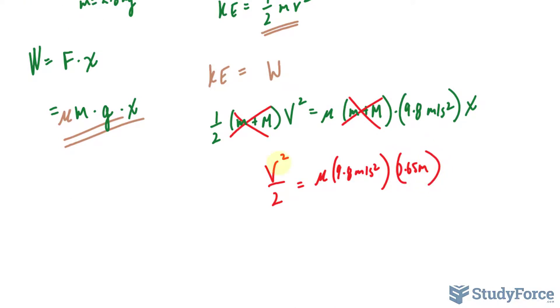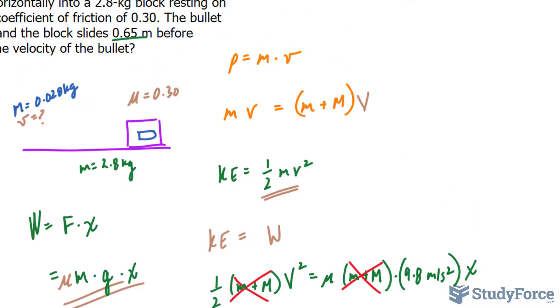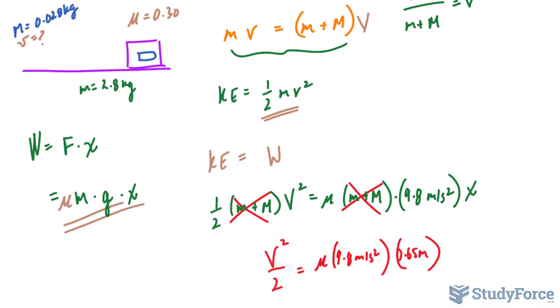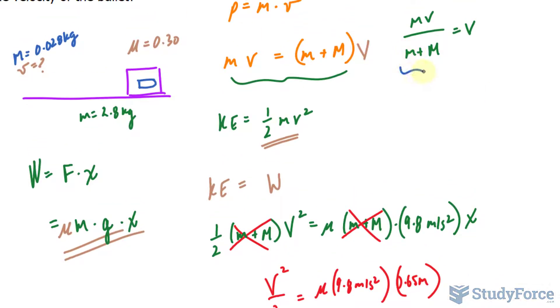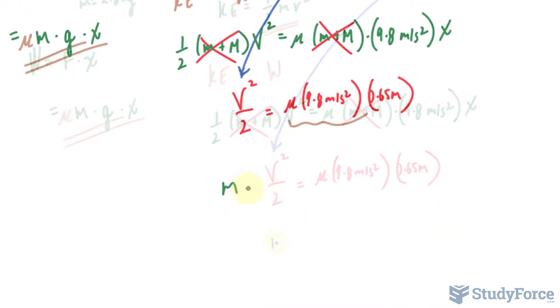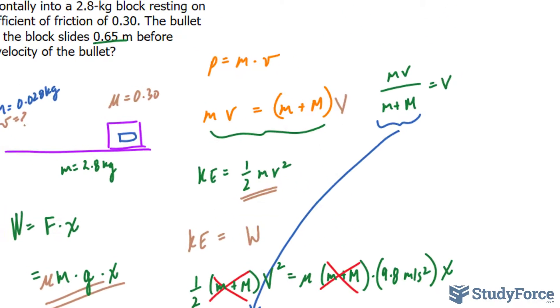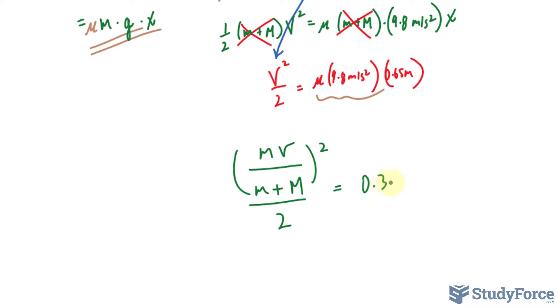Moving forward, we need an expression to replace this capital V with. And for that, we'll use the formula that we came up with at the very beginning. So if I divide both sides by m plus capital M, I get mV over m plus capital M is equal to V. I'll take that expression, this one right here, and I'll throw it into there. So watch what happens, little m times little v over little m plus big M. Raised to the power of 2 over 2 is equal to mu, according to the question, is 0.30 times 9.8 meters per second squared times 0.65.